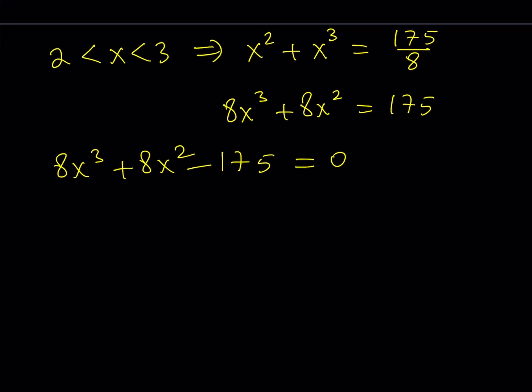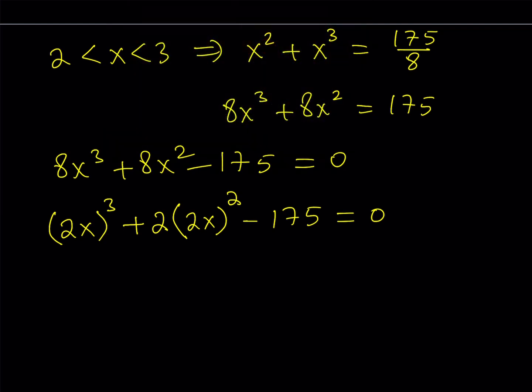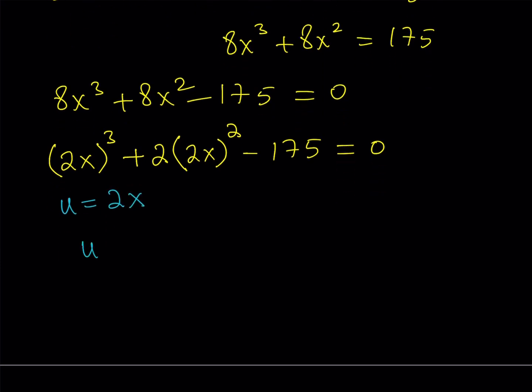I'm going to write 8x cubed as 2x quantity cubed, and write the 4x squared times 2. So 2 times 4x squared, and obviously 4x squared can be written as a power of 2x. That's what's really cool about it. So now my equation turns into a monic if I make a substitution. And that substitution is saying that, okay, why don't we call u equals 2x? Great. Now this gives us u cubed plus 2u squared minus 175 equals 0.